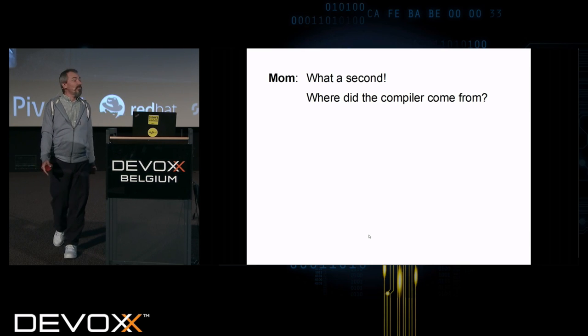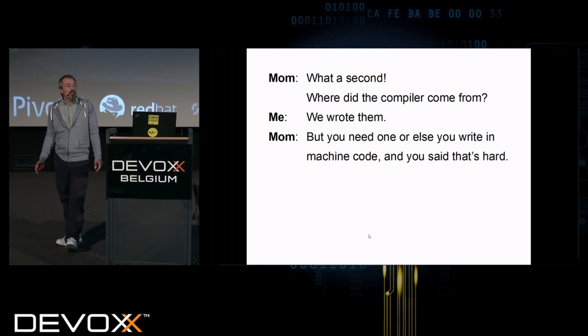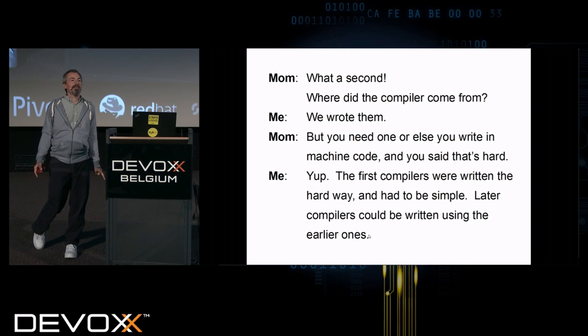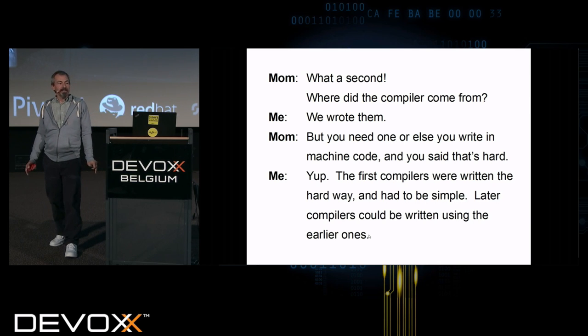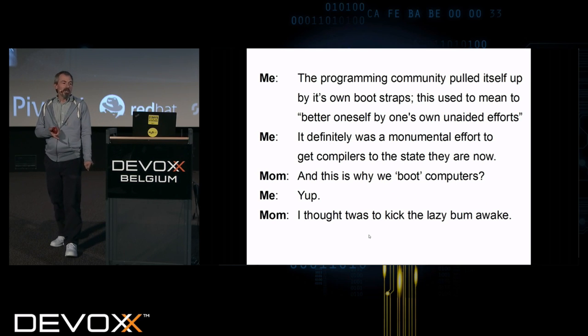Wait a second. Where did the compiler come from? Well, we wrote them. But you need one or else you write in machine code. And you said that's hard. And the answer is yes, it is hard. The first compilers were written the hard way, and they had to be simple. Later compilers could be written using the earlier ones. The programming community pulled itself up by its own bootstraps. This used to mean to better oneself by one's own unaided efforts. It was definitely a monumental effort to get compilers to the state where they are now.